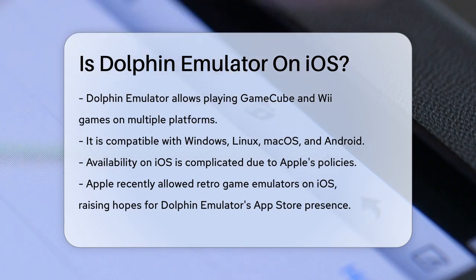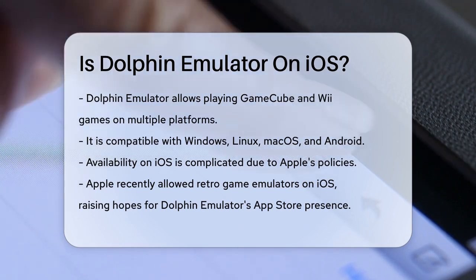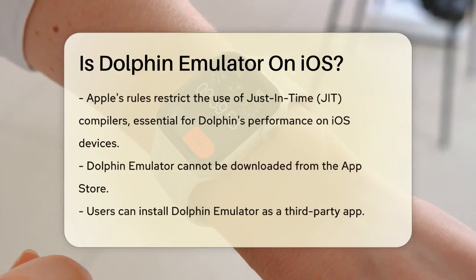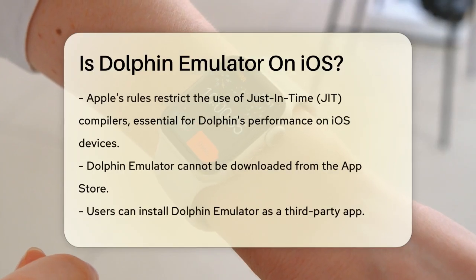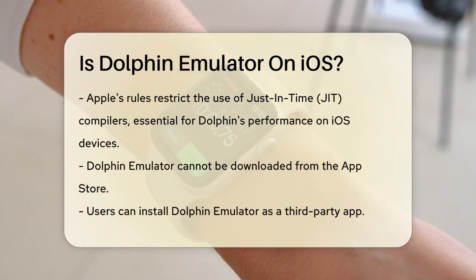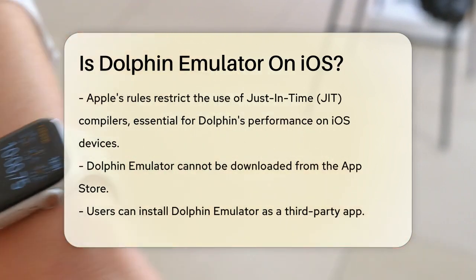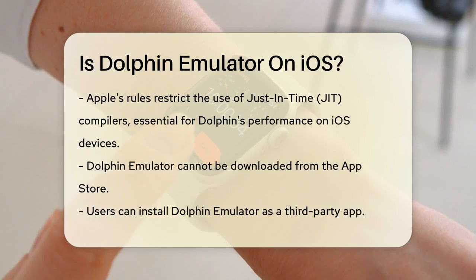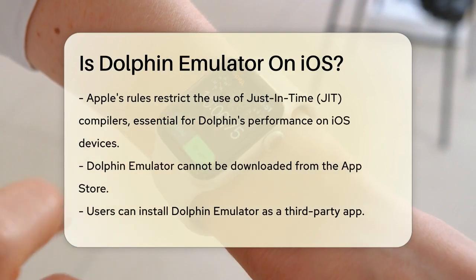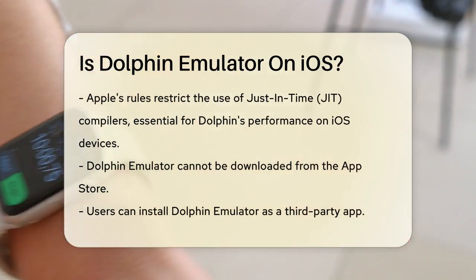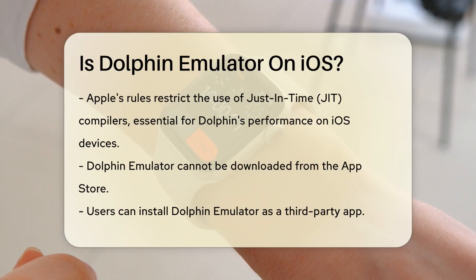Recently, Apple changed its policies to allow retro game emulators on the iOS platform, which sparked hope that Dolphin Emulator might make its way to the App Store. But there's a catch. Apple's rules prohibit the use of just-in-time JIT compilers, which are essential for the Dolphin Emulator to run efficiently on ARM-based CPUs like those in iOS devices.